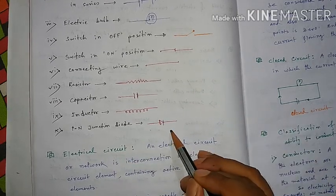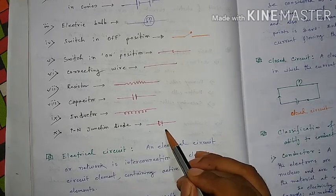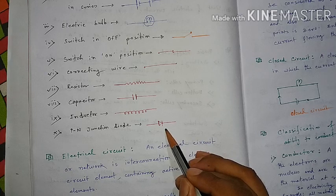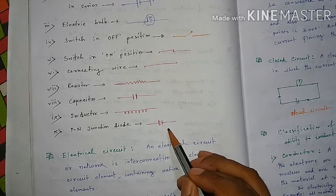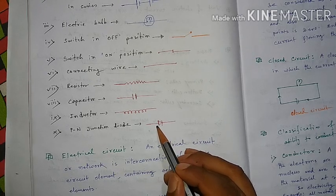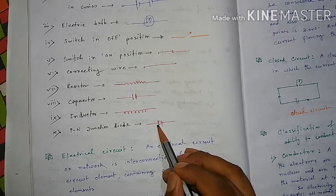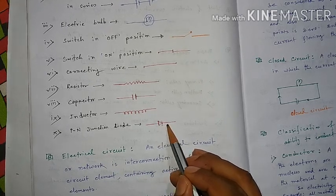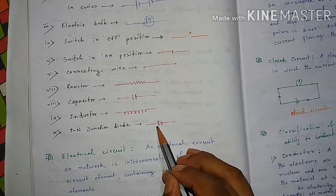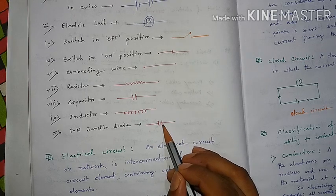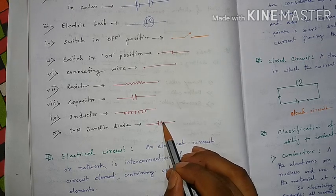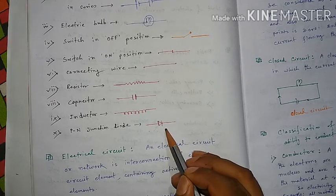The PN junction diode operates at high and low states. This is the P-type terminal of the diode.